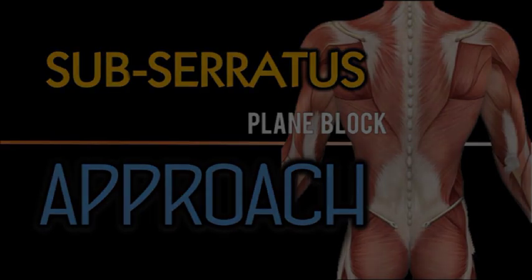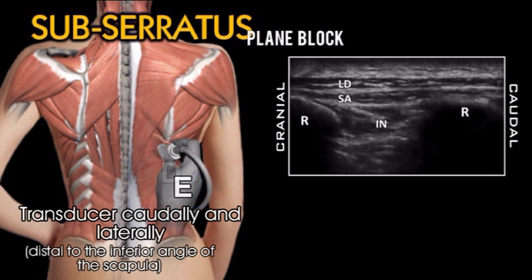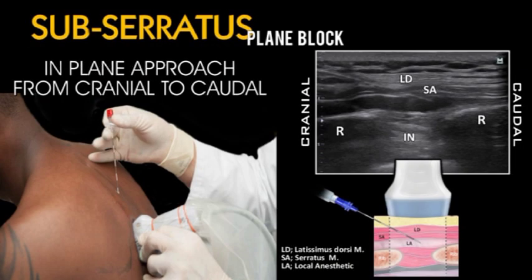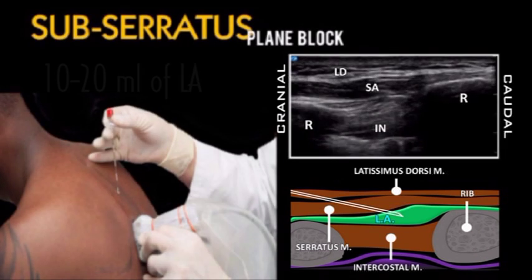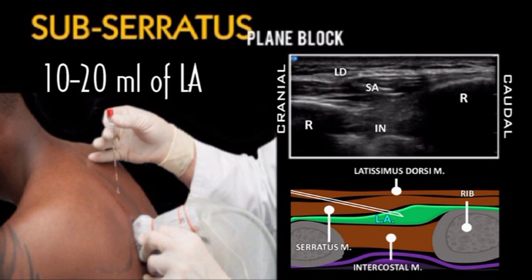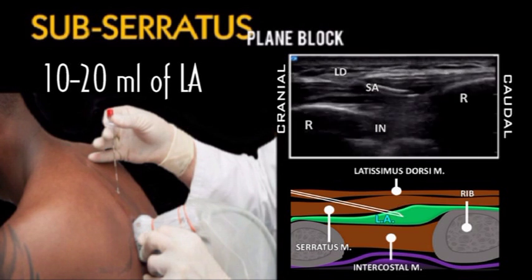To identify the sub-serratus plane, move the transducer caudally and laterally to the inferior angle of the scapula. Identify the latissimus dorsi, serratus anterior, and intercostal muscles between the ribs. Then advance the needle in-plane directed caudally and laterally. Inject 10 to 20 ml of local anesthetic in the tissue plane between the serratus anterior and the external intercostal muscle and ribs.